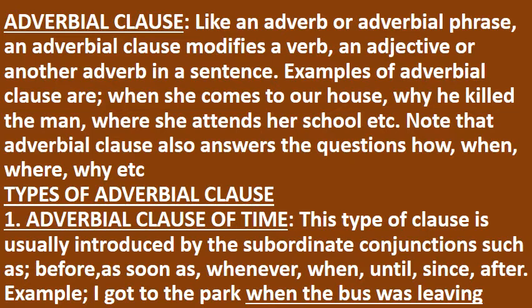Types of Adverbial Clause. Type 1: Adverbial Clause of Time. This type of clause is usually introduced by the subordinate conjunctions such as before, as soon as, whenever, when, until, since, after. Example: I got to the park when the bus was leaving.